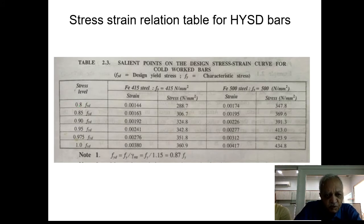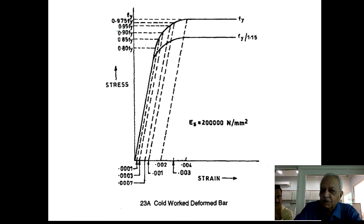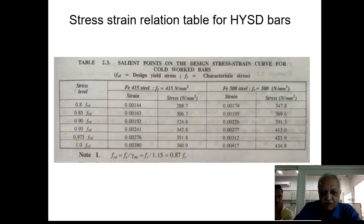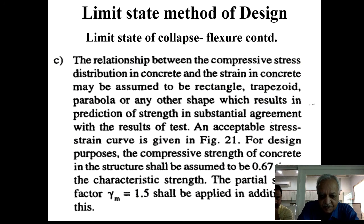A table shows, for different values of strain, the corresponding value of stress for Fe 415 and Fe 500 grades, picked directly from the stress-strain diagram. For 0.8Fy, a corresponding strain is tabulated. These strain-stress values are sometimes required when designing a beam to determine its load-carrying capacity and so on.